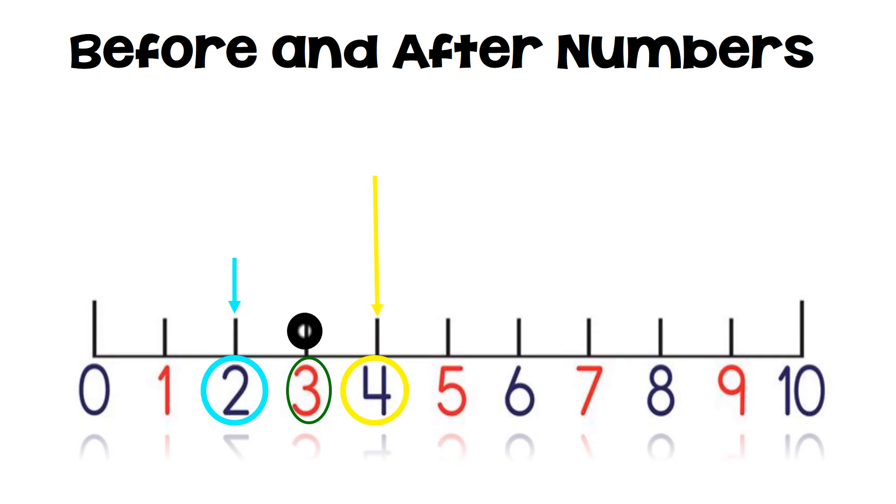Look at the number three on this number line. Which number is before and which is after? If you said two is before three, you are correct. And if you said that four is after three, you are double correct. Good job! Now let's practice.